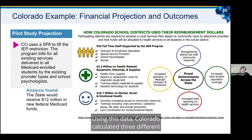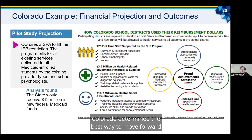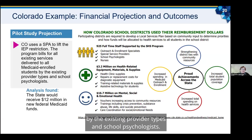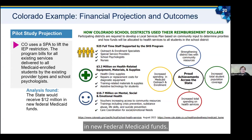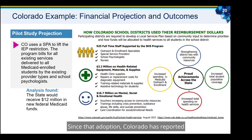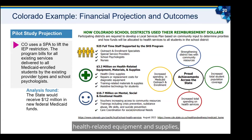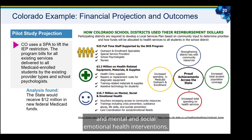Using this data, Colorado calculated three different scenarios for expansion and the financial analysis of each. Colorado determined the best way to move forward was by using a SPA to lift the IEP restrictions, billing for all existing services delivered to all Medicaid-enrolled students by existing provider types and school psychologists. The analysis found that the state would receive $12 million in new federal Medicaid funds. Since that adoption, Colorado has reported continued increases in reimbursement spending and expansion of services, including full-time staff, health-related equipment and supplies, and mental and social-emotional health interventions.